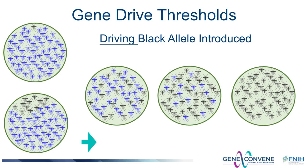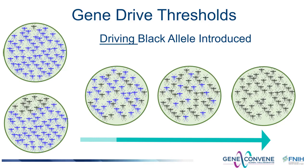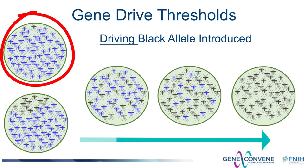There will also be characteristics of drive systems that determine how many or few drive-containing organisms need to be introduced for it to successfully spread through a population. This is referred to as the drive threshold, and depending on the specific system and how it was designed, the threshold may be very low — requiring just a few drive-containing organisms to initiate the process — or high, requiring many drive-containing organisms.